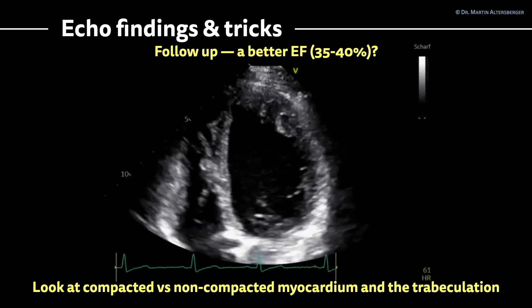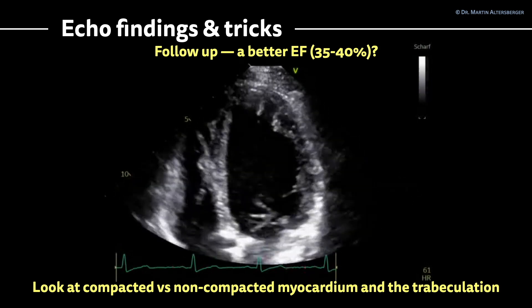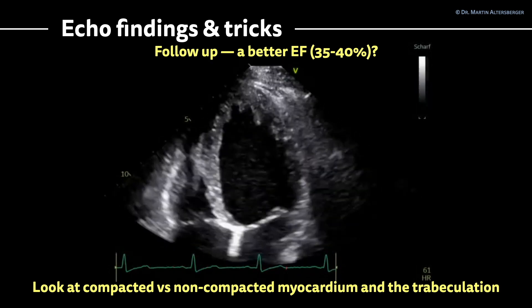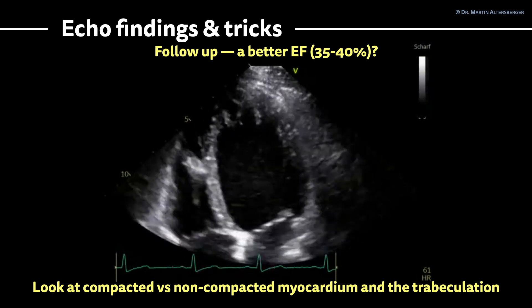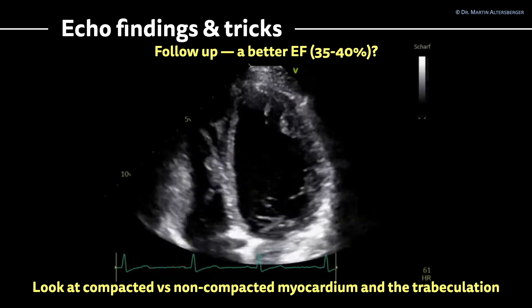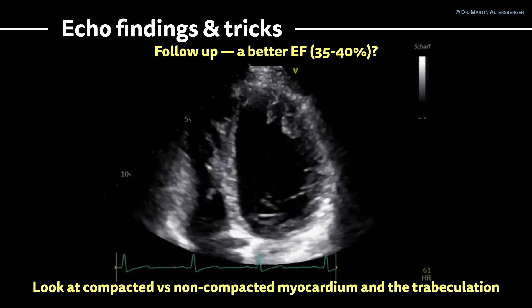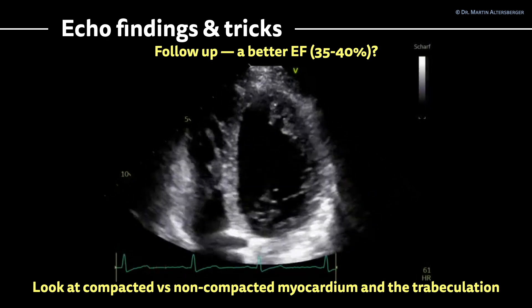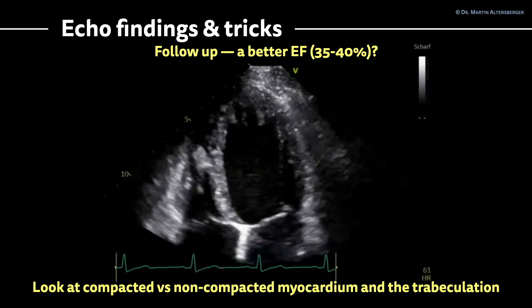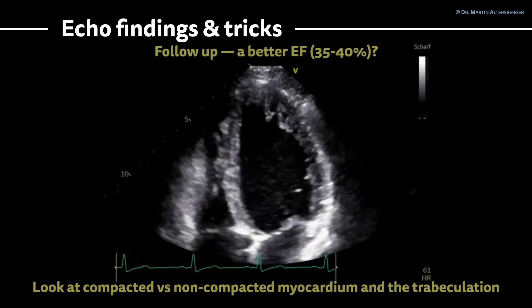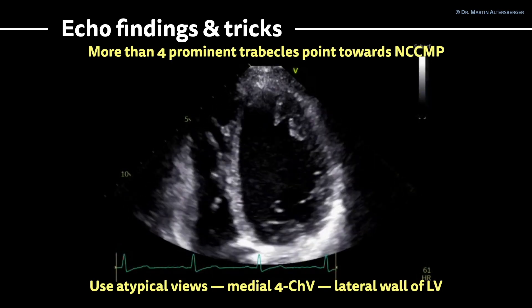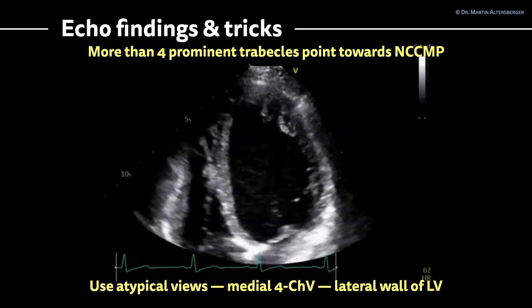A few weeks later with heart failure treatment, follow-up showed ejection fraction visually looks definitely better — in the range of 35 to approximately 40 percent. Look at the compacted versus non-compacted myocardium especially in the apical and apical lateral regions. When you see more than four prominent trabeculations, it points toward non-compaction cardiomyopathy — keep that in mind.